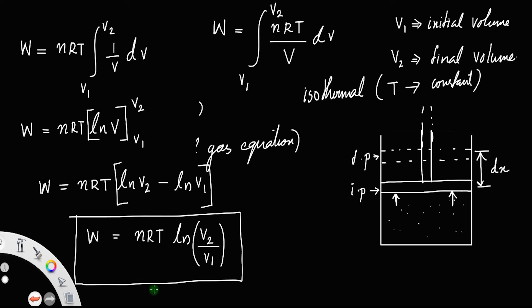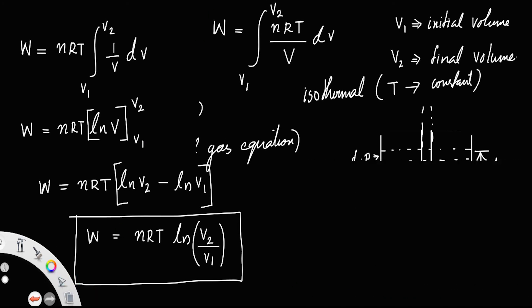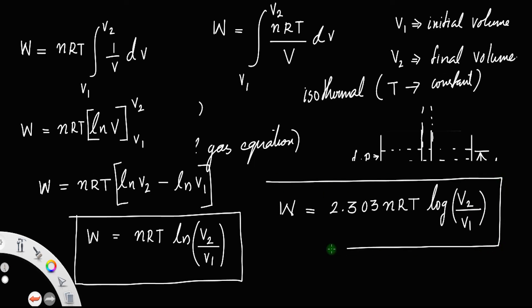When you convert the natural log into log of base 10, you multiply by the factor 2.303. That is, W equals 2.303 nRT log(V2 by V1), where the base is 10. This is the expression for work done in an isothermal process.